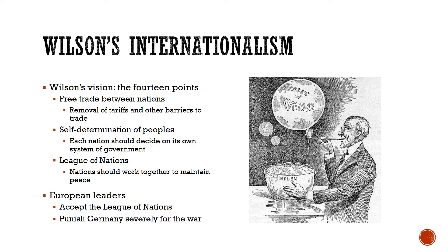The first is free trade between nations. Wilson believes that if all countries can trade with each other and share their resources, this will reduce the chances of future wars, so he calls for the reduction of tariffs and other barriers to trade. Second, he calls for something called the self-determination of peoples — the idea that each nation should be allowed to decide for itself on its own system of government. This implies that defeated Germans, and all peoples ruled by empires around the world, would get to pick their own system of government. Third, he calls for something called the League of Nations, an organization where all major nations would come together and work to ensure peace, so that if any nation started causing problems, they could work together to prevent another great war.